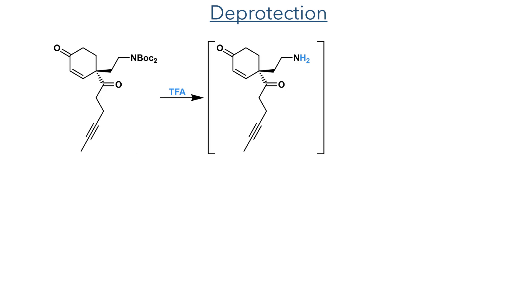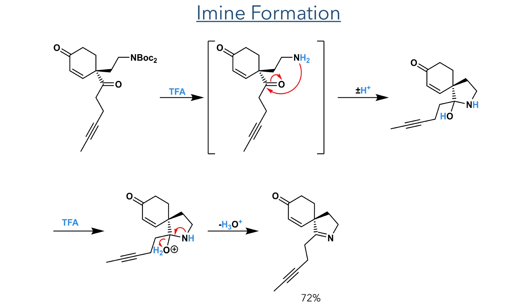With the ketone in place, they could then use it to produce the spirocyclic imine. The Boc-protected amine was first deprotected using TFA, and this underwent spontaneous cyclisation to generate the imine. The ketone first undergoes intramolecular attack from the amine, generating a hemi-aminal that is then protonated by TFA and eliminates water to produce the imine in a 72% yield.